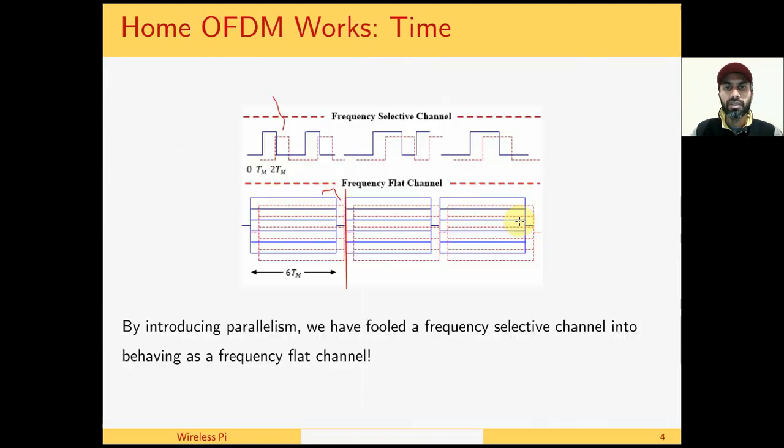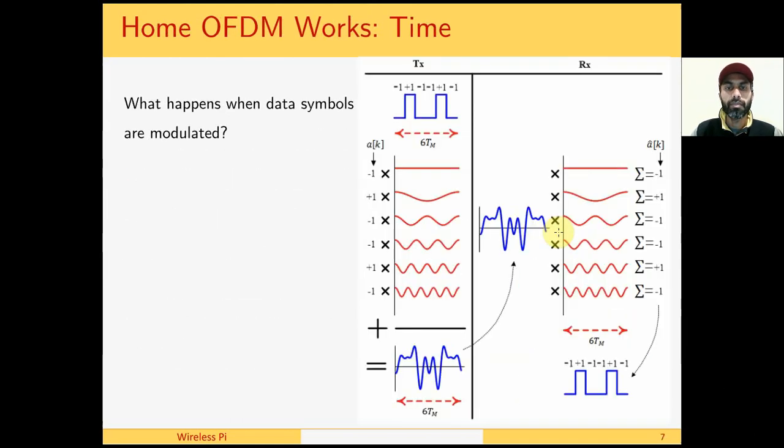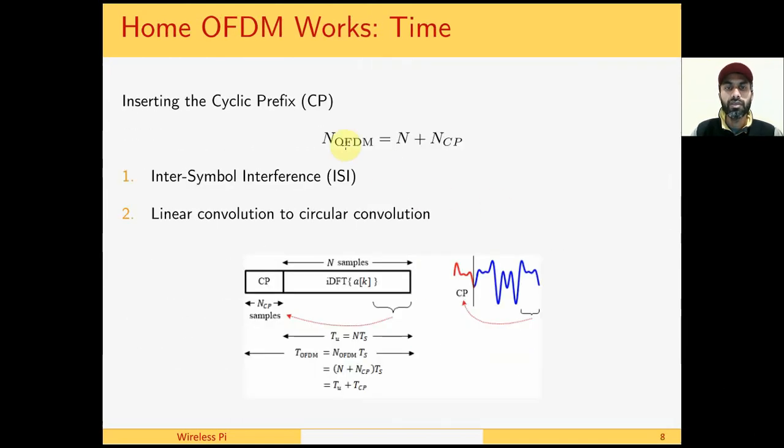Recall that we said that a guard interval is inserted between each set of parallel waves. This guard interval is actually the cyclic prefix, and all this means is that we take a certain number of samples and prepend them at the start of the data signal. The length of the cyclic prefix is the maximum expected channel length so that when the multipath copies arrive, they do not interfere with our main data block. We say that we have avoided the inter-symbol interference.